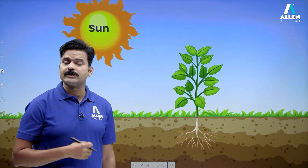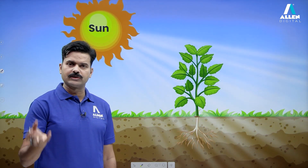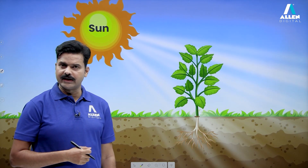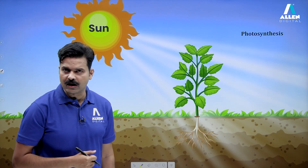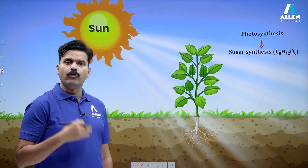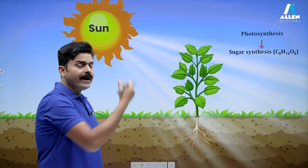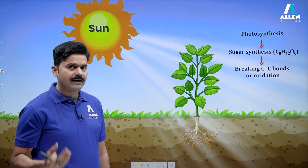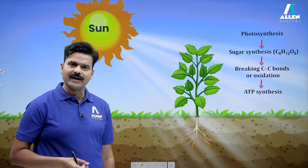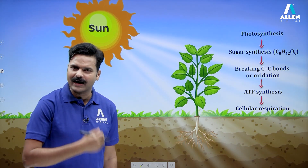Plants also carry out cellular respiration. Inside plants, a special process runs in the presence of light — using carbon dioxide and water, plants synthesize sugars or food. This process is called photosynthesis. In photosynthesis, plants synthesize sugars such as C6H12O6 (glucose). But plants also need energy, so they oxidize or break the carbon-carbon bonds of these sugars and use the released energy to synthesize ATP. This process is called cellular respiration — it also takes place inside plants.